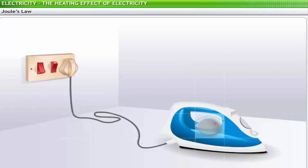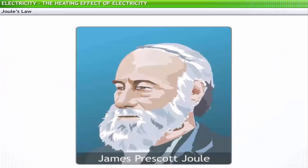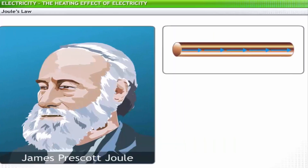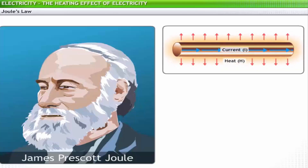We can monitor and control the heat generated by electric current by regulating the current supplied to an appliance. James Prescott Joule studied the relationship between heat generated in a conductor and the amount of current flowing through it. This relationship is popularly known as Joule's law or the Joule effect.